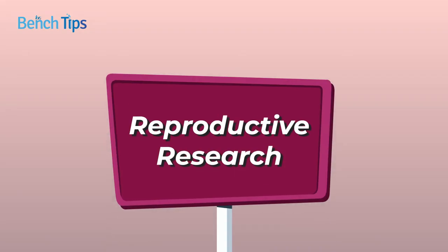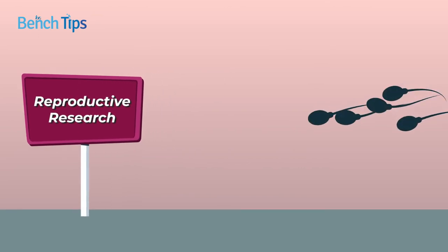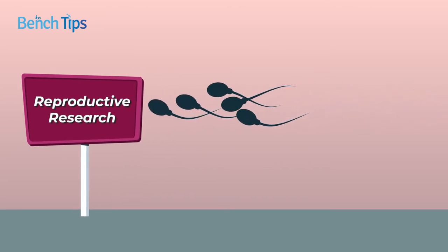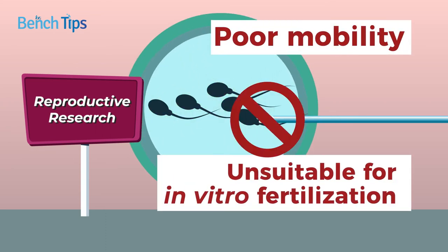The field of reproductive research is another example. For instance, a large proportion of sperm sorted via electrostatic droplet-based techniques have poor mobility and have been found to be unsuitable for in vitro fertilization.